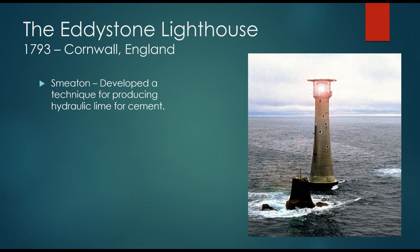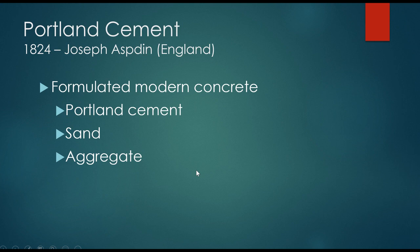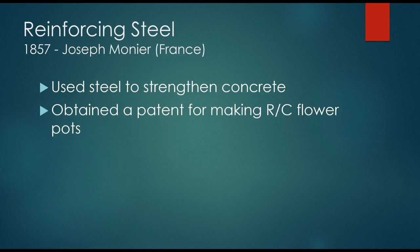One of the earliest modern uses was the Eddystone Lighthouse, built in 1793 in Cornwall, England, where they developed a technique for producing hydraulic lime for cement — one of the major binding agents in the material. Portland cement, our modern creation, was developed by Joseph Aspdin in England in 1824, introducing sand and coarse aggregate such as limestone or granite, bringing us into the modern era of cement.